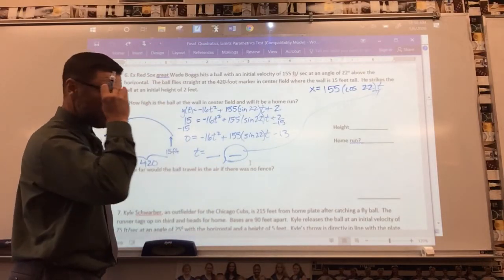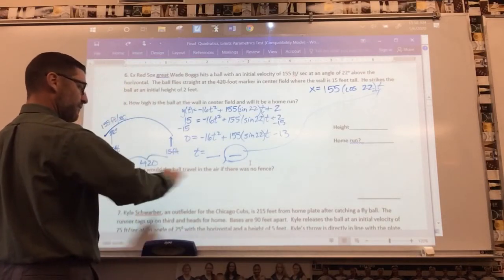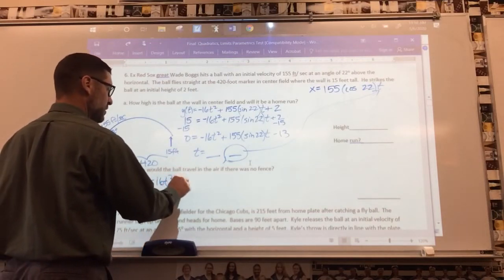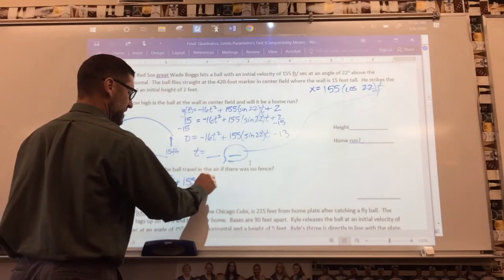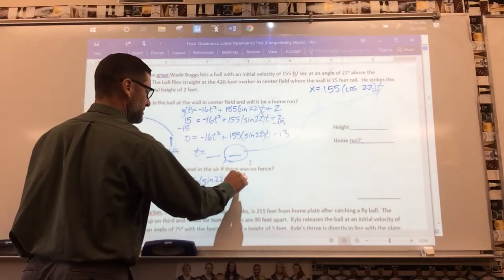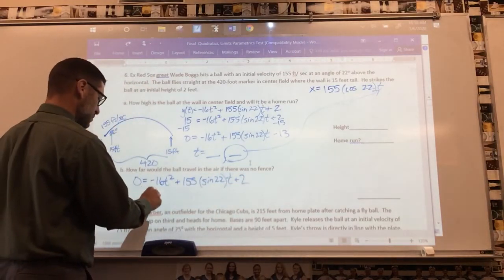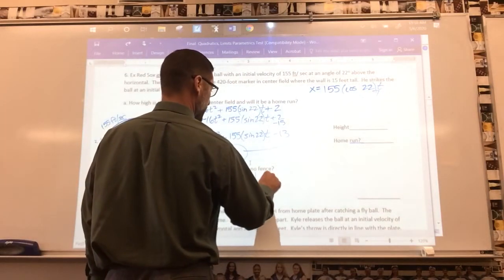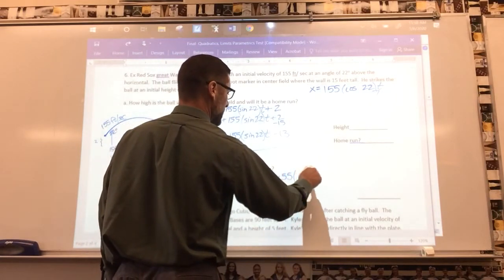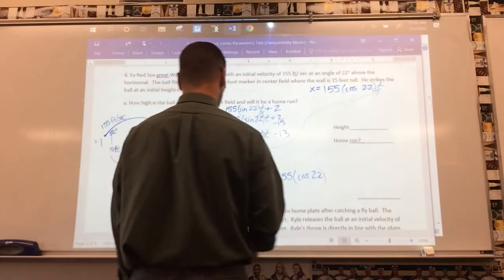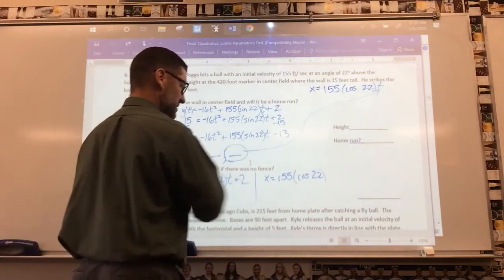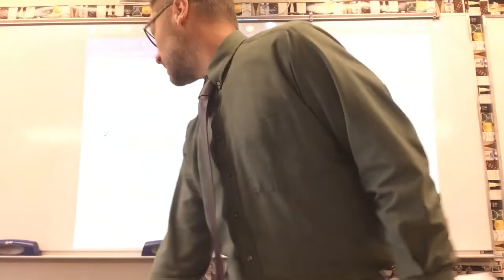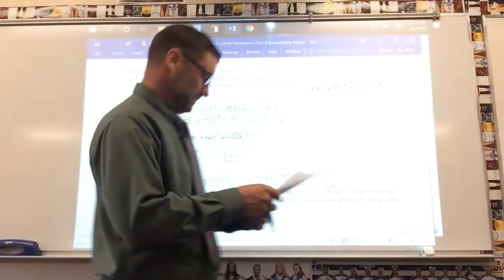How far will the ball travel in the air if there were no fence? That's the whole path of the ball. Plug zero in for y: 0 equals negative 16t² plus 155 times sine(22) times t plus 2. Solve for t, then take that t value and plug it into the x equation — x equals 155 times cosine(22) times t — to find the total horizontal distance the ball would travel.